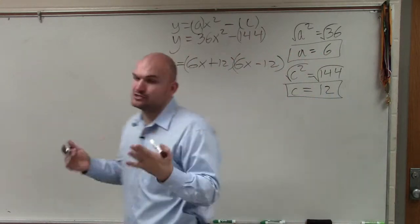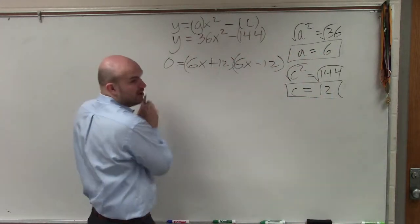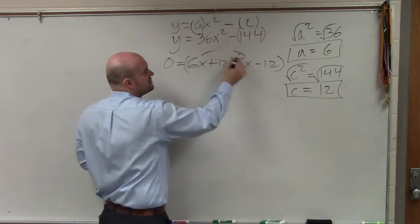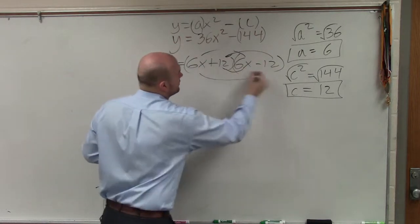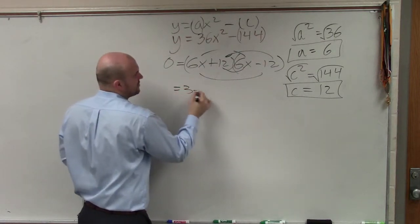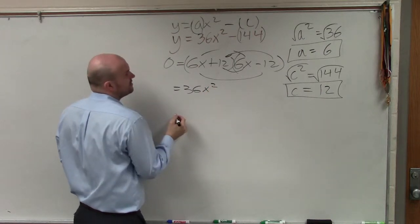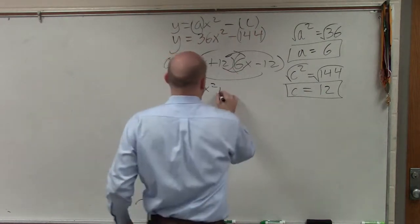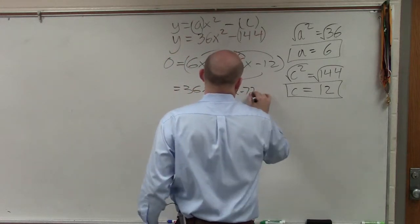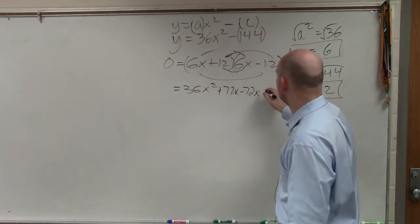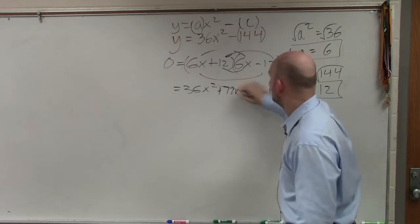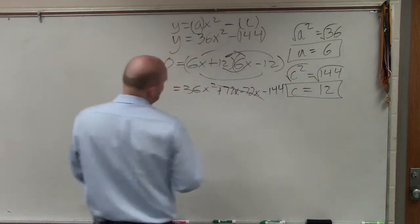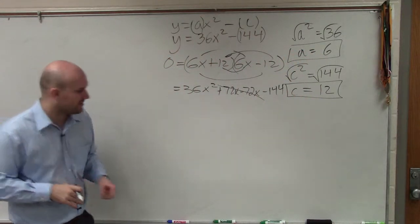So you take the square root of both those terms and multiply them. You can always double check your answer using FOIL. 6x times 6x equals 36x². Then you have 6 times -12, which gives positive 72x minus 72x. And 12 times -12 is -144. Those terms cancel out, and you're left with 36x² - 144.